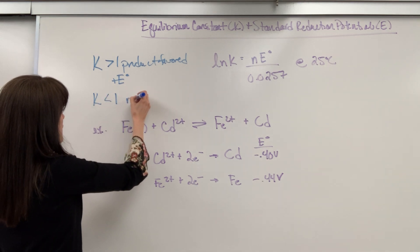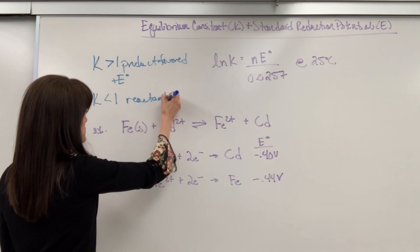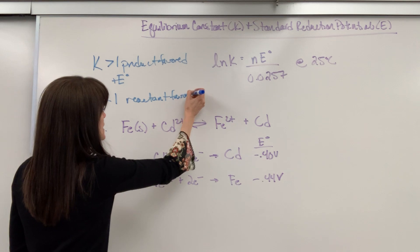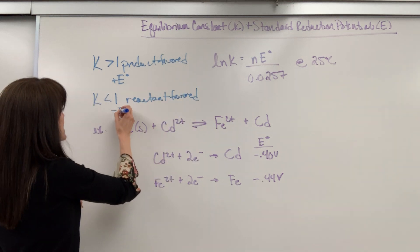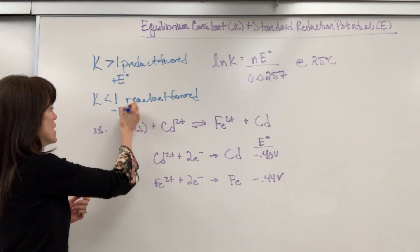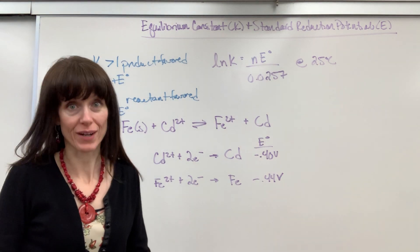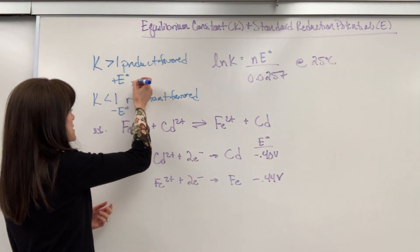And the reverse is also true. If K is less than 1, that's reactant favored, which means we've got a negative E, that the potential is going to require energy.